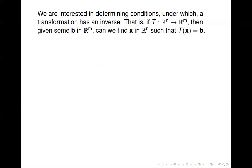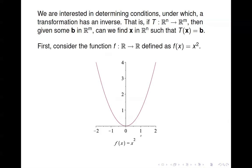Now we're interested in determining conditions under which a transformation has an inverse. That means: if you have a transformation mapping R^n to R^m, then given some b in R^m, can we find an x in R^n that maps to that b? Can we find x such that T(x) = b? Let's go back to functions defined on the real numbers. We looked at f(x) = x².